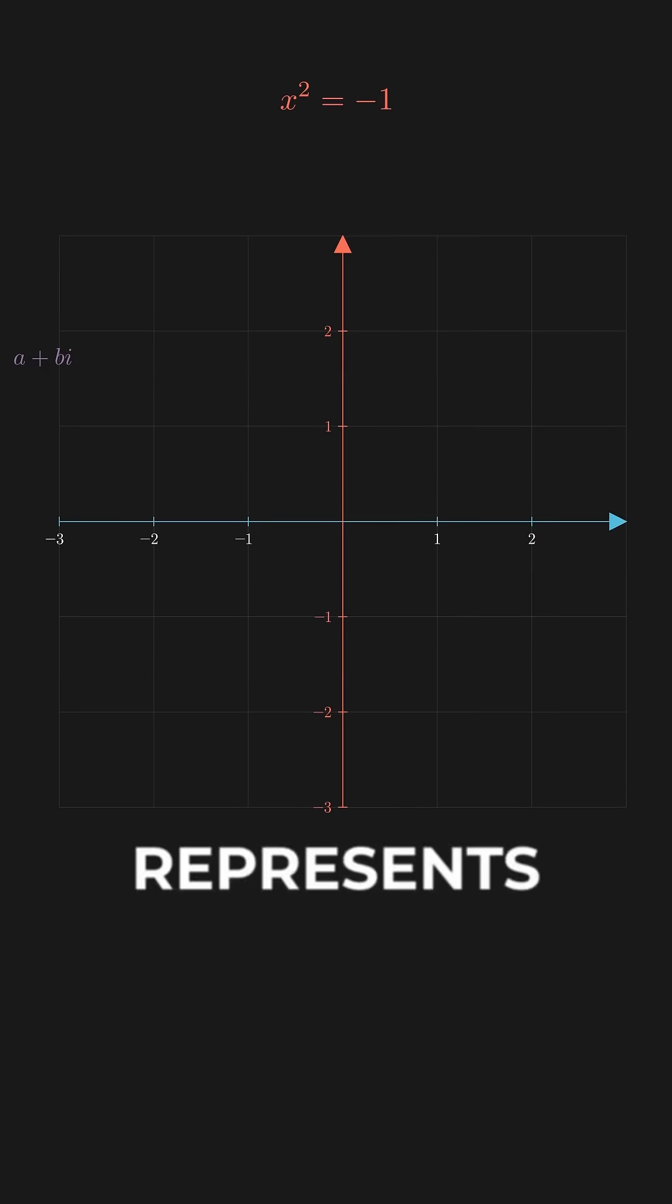where each point represents a number like two plus three i. These are called complex numbers, and they contain a real part, a, and an imaginary part, b i.